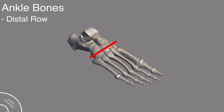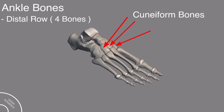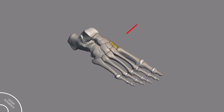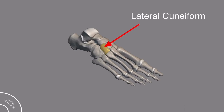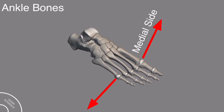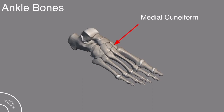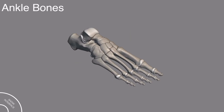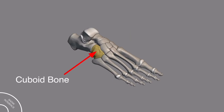In the distal row, we have four bones. These three bones are called the cuneiform bones. This one is the medial cuneiform bone, this is the intermediate cuneiform bone, and this is the lateral cuneiform bone. These three cuneiform bones are named according to their location — medial, intermediate, and lateral. The fourth bone in the distal row is the cuboid bone.